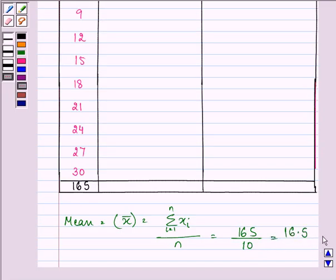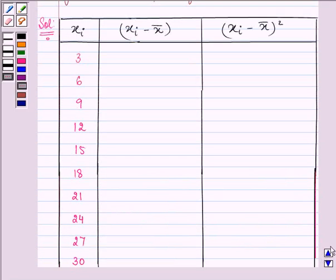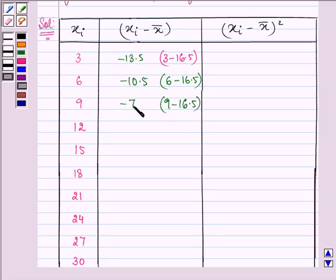Now we will be finding out xi minus x bar. It will be 3 minus 16.5 giving us the answer as minus 13.5 and then we need to subtract 16.5 from 6 giving us minus 10.5, then 9 minus 16.5 giving us minus 7.5 and so on.